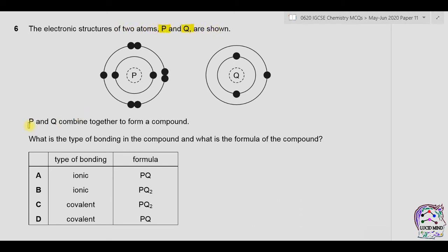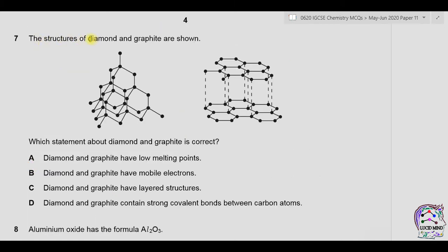Question six: the electronic structures of atoms P and Q are shown. P has seven electrons in its outermost shell so belongs to group 7, while Q has one electron in the outermost shell so belongs to group 1. Q is a metal and P is a non-metal, so the bond between them is ionic. Q loses one electron and P gains one electron. The formula is PQ because one atom of P and one atom of Q combine. Answer is A.